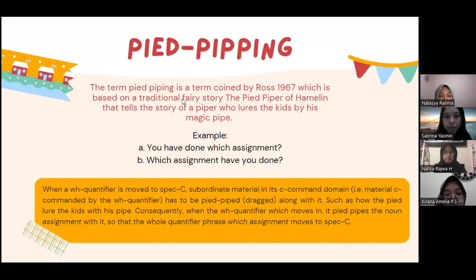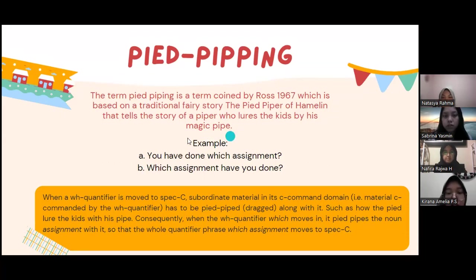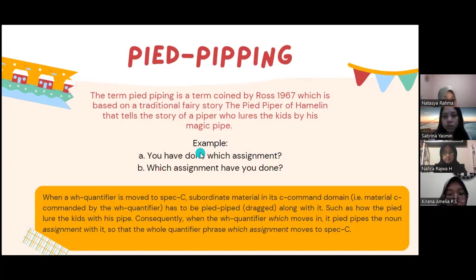The next topic is Pied Piping. Pied Piping is a term coined by Ross in 1967, which is based on the traditional fairy story 'The Pied Piper of Hamelin,' telling the story of a piper who lured kids with his magic pipes. The first sentence is: 'you have done which assignment' — an equi form — and if changed to a non-equi form, it will be 'which assignment have you done.' The noun 'assignment' follows the quantifier 'which' — but why?